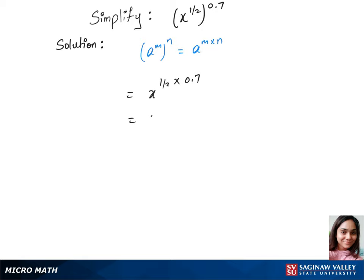We multiply the powers, which gives us x to the power 0.35. That's our final answer.